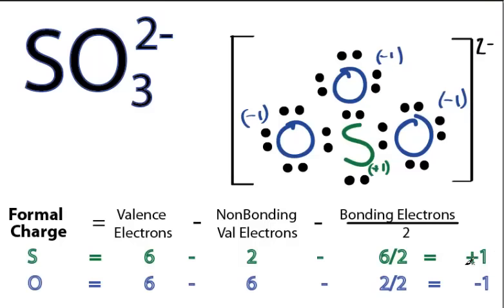I see this plus 1 here on the central sulfur. And I know if I pull a pair of electrons from the oxygen and form a double bond, that'll go to zero. So I'd like to try that and see what it looks like.